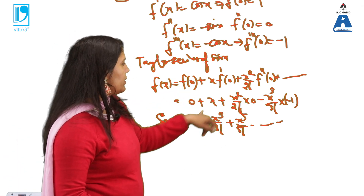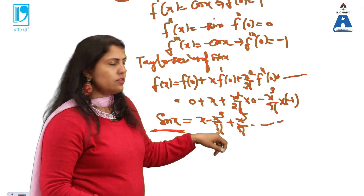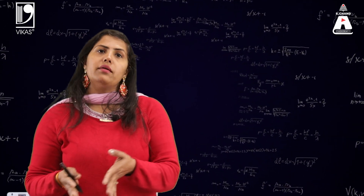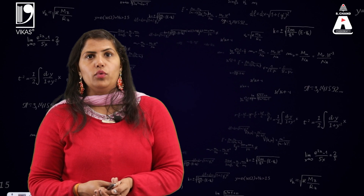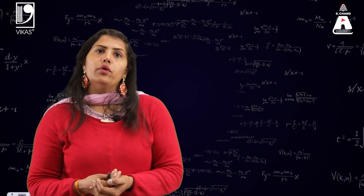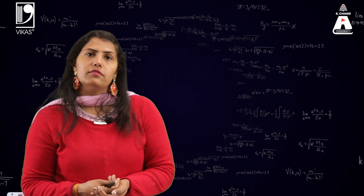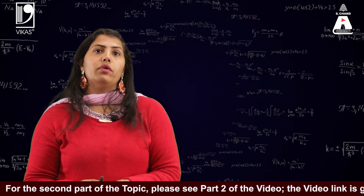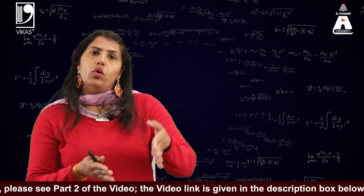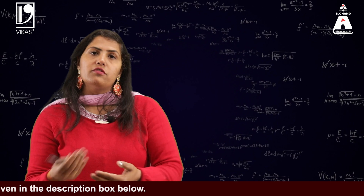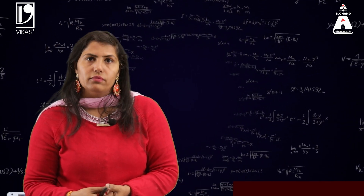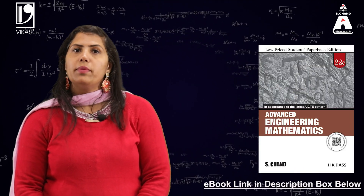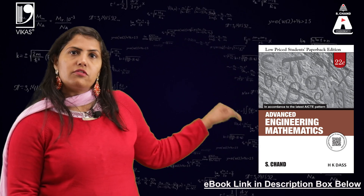Every Taylor series is not a Maclaurin series, but every Maclaurin series is a Taylor series. This is the end of Part 1. In this part, we covered Taylor series and Maclaurin series with remainder tending to zero. We now understand how e to the power x and sin x are connected to their series forms. If you want to learn engineering mathematics, please refer to the book by S.Chand Publishing. The e-book link is given in the description box below.